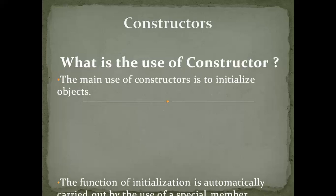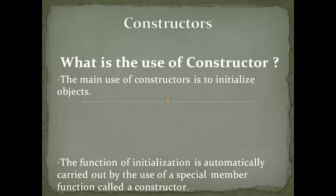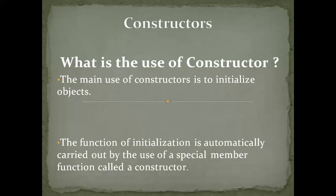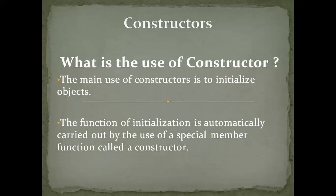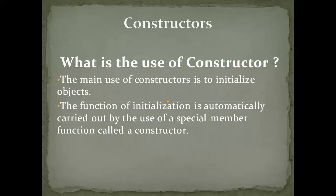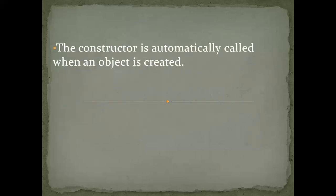What is the use of a constructor? The main use of a constructor is to initialize objects. The function of initialization is automatically carried out by this special member function. The constructor is automatically called when an object is created.